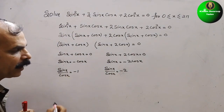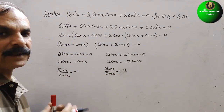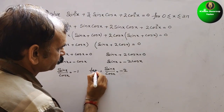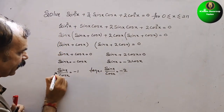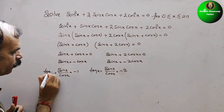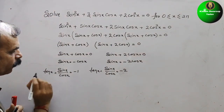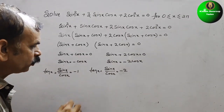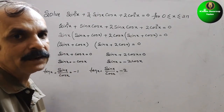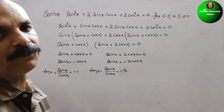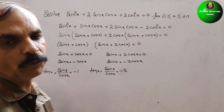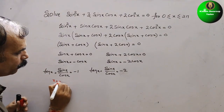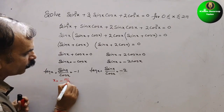We know that sinx/cosx = tanx. So we have tanx = −1 and tanx = −2. We know tan(45°) = tan(π/4) = 1, so for tanx = −1, we get x = −π/4.